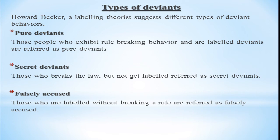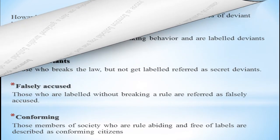For example, there are three friends who went somewhere. Two of the three friends are taking drugs, so those two are pure deviants. But the third friend is just sitting with them and is not taking drugs. However, when their parents or a teacher arrives and sees all three together, all three boys get labelled as drug takers. The two who were taking drugs were pure deviants, but the third one is a deviant who is falsely accused.